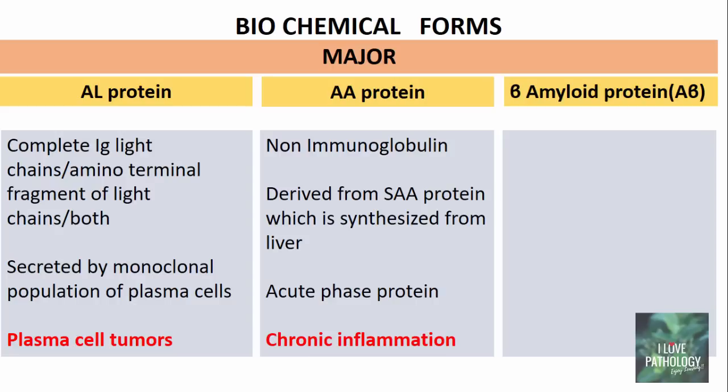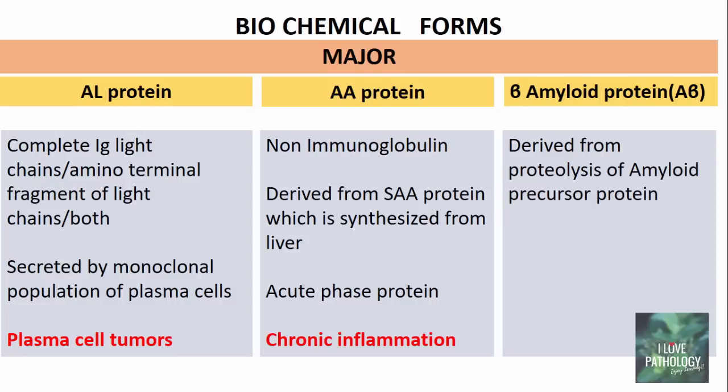The third major type of protein is beta-amyloid protein, or A-beta. This is derived from the proteolysis of amyloid precursor protein (APP), which is a transmembrane glycoprotein. This type of protein is found in Alzheimer's disease.